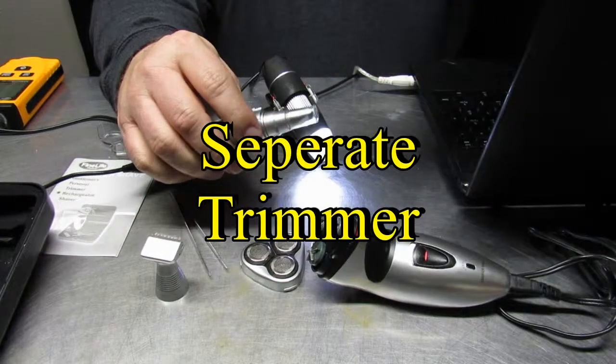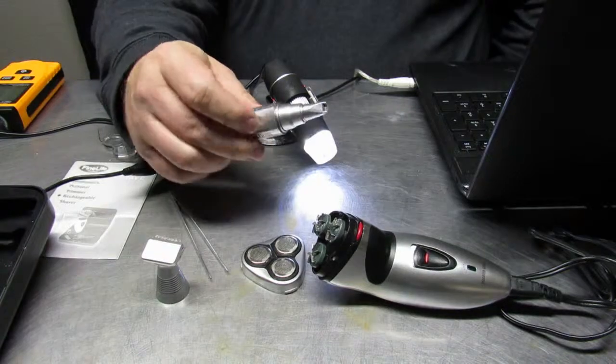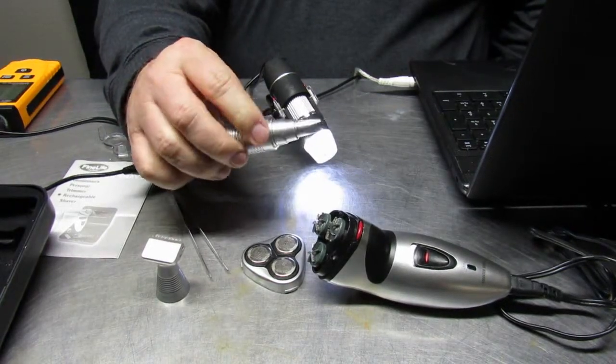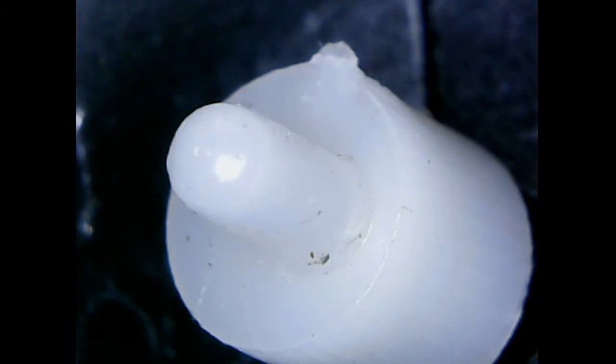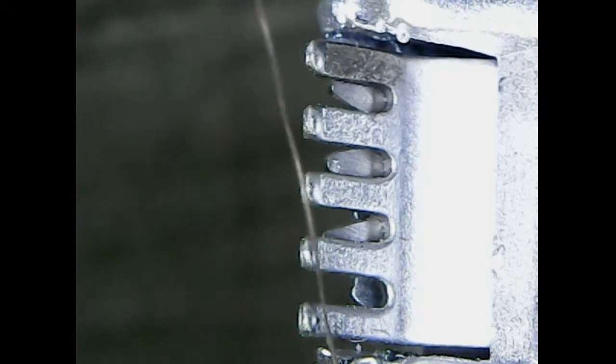The separate trimmer has its own little motor that's driven by a one and a half volt battery. This little bob is turned and it's offset so that it causes the blade to go back and forth as it hits various sides of it.